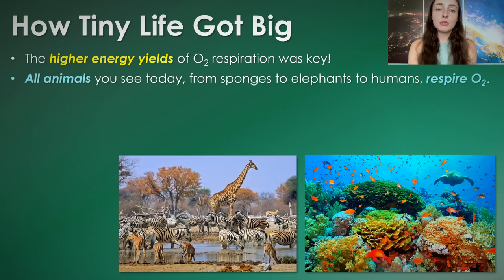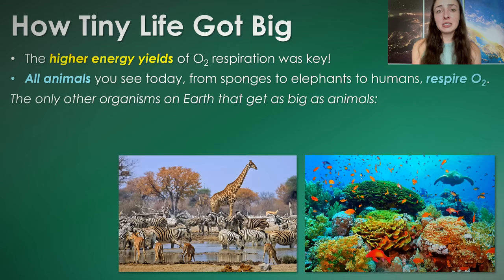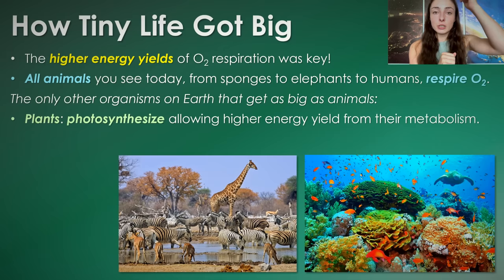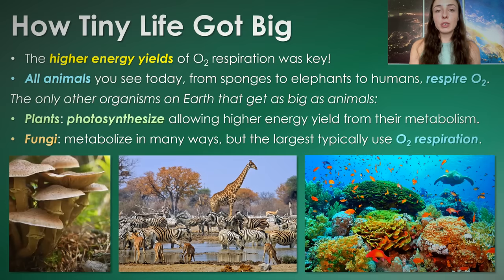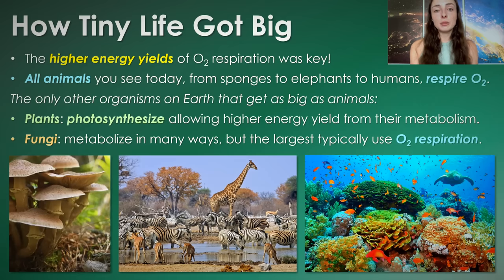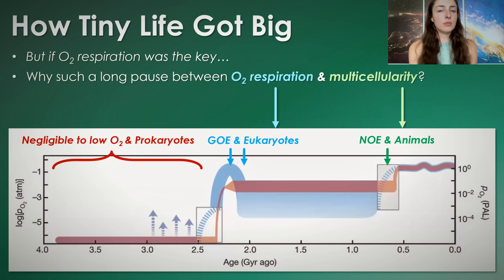All animals from sponges to elephants to humans respire oxygen. The only other organisms on Earth that get as big as animals are plants, which photosynthesize using a metabolism with very large redox potential differences, and fungi, which can get pretty large as well — and the large ones typically use aerobic oxygen respiration.